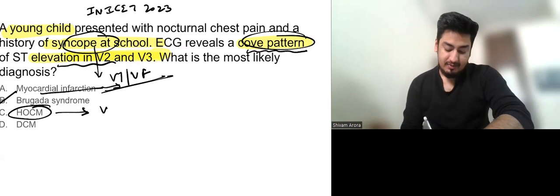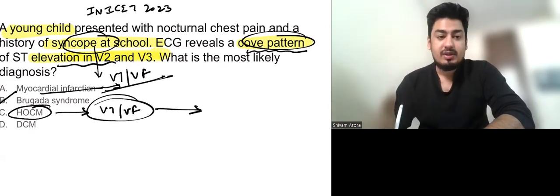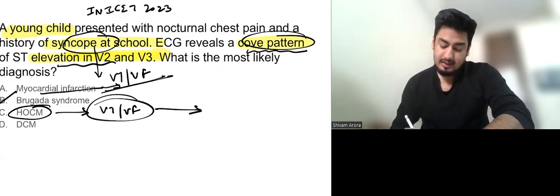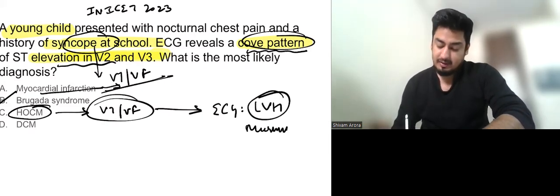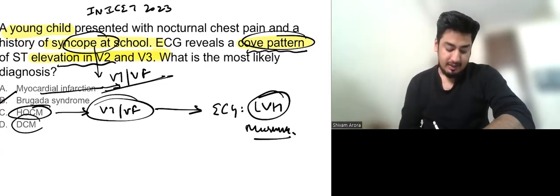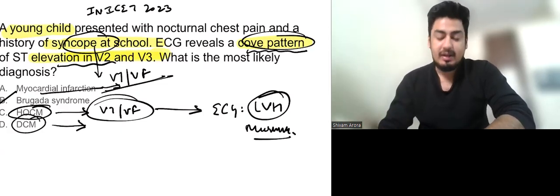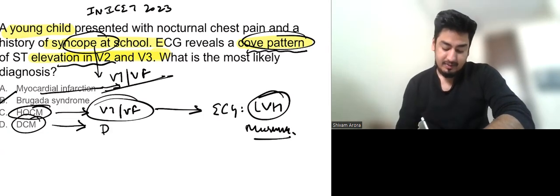HOCM may be in a young patient with VT or VF but HOCM on history means that on ECG there will be LVH and murmur will be there. Dilated cardiomyopathy again cannot be the diagnosis because in DCM again there is no ST elevation.